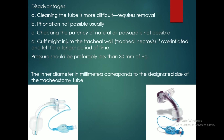Disadvantages of the Portex tube: cleaning is more difficult as it requires removal of the entire tube. Phonation is not usually possible. Checking the patency of the natural airway is not possible. The cuff might injure the tracheal wall, causing tracheal necrosis if overinflated or left for a longer period — pressure should preferably be less than 30 mmHg. The inner diameter in millimeters corresponds to the designated size of the tracheostomy tube. Phonation is not usually possible because there is no fenestration, and if the outer opening is closed the patient will have difficulty breathing. However, fenestrated versions of this tube are also available.